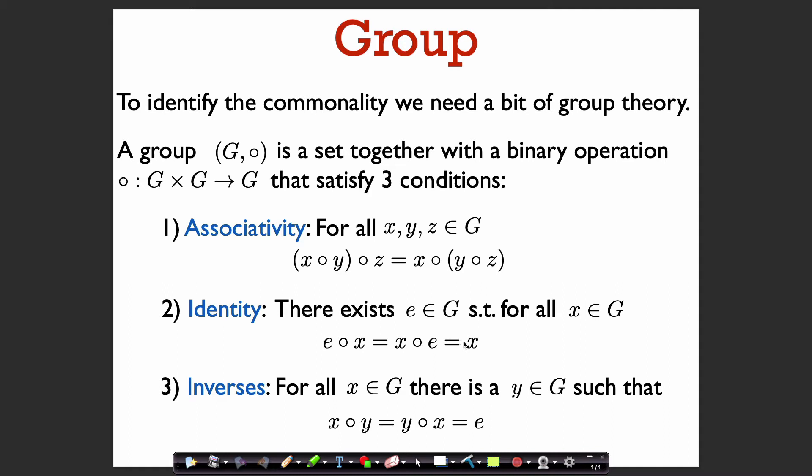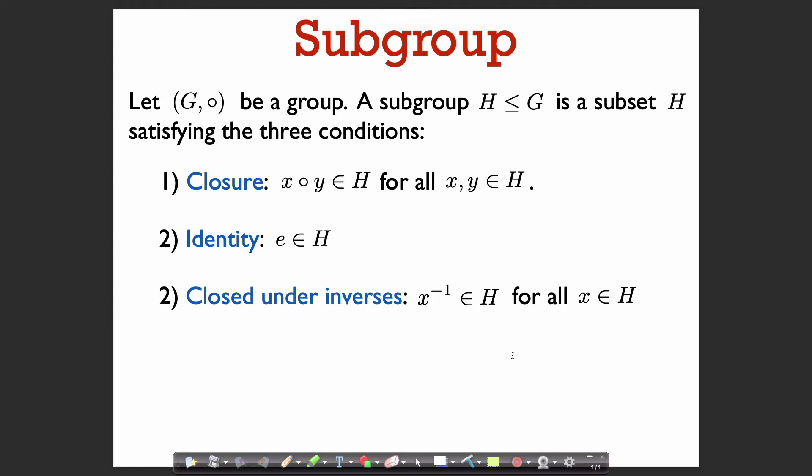For every x there should be a y such that x ∘ y equals the identity element. That's the definition of a group. We're also going to need the notion of a subgroup — a subgroup of a group is just a subset of the group that is also a group.